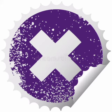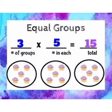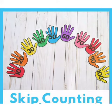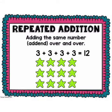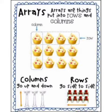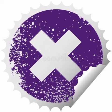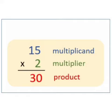There are 4 different ways to show multiplication: equal groups, skip counting, repeated addition, and array. In a multiplication, there is a multiplicand, multiplier, and product.